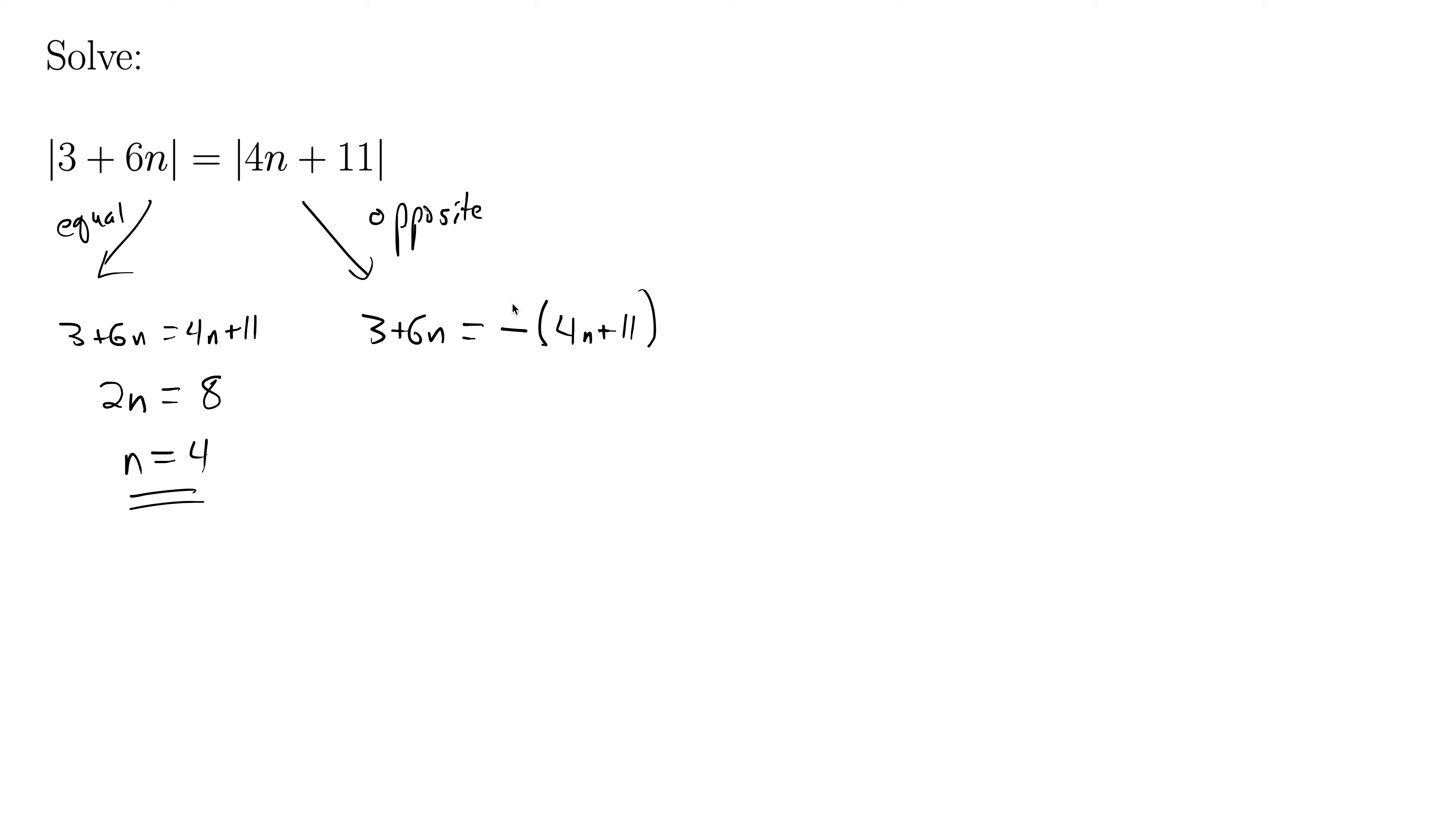On the right side, we'll distribute this negative through to both those terms, that gives us 3 plus 6n equals negative 4n minus 11.